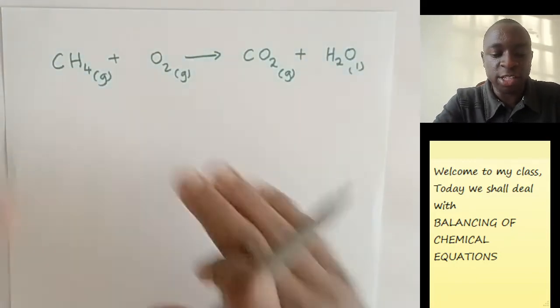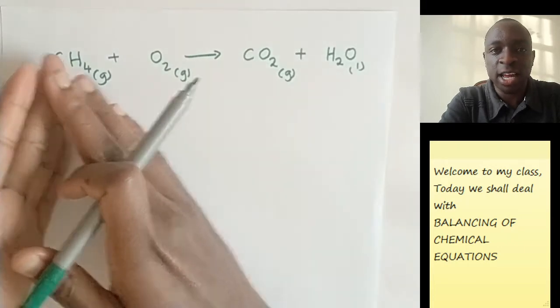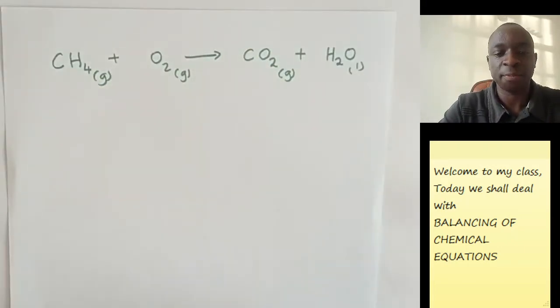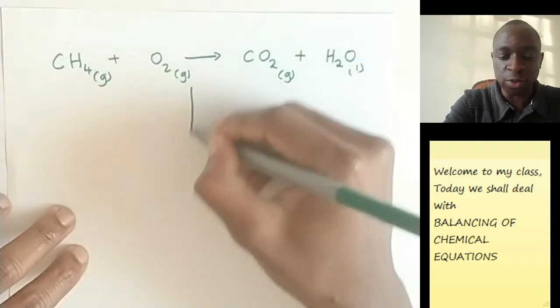So the number of hydrogens that were there in the reactant side must be the same as the ones that are in the product side. So let us see how to do it very quickly.